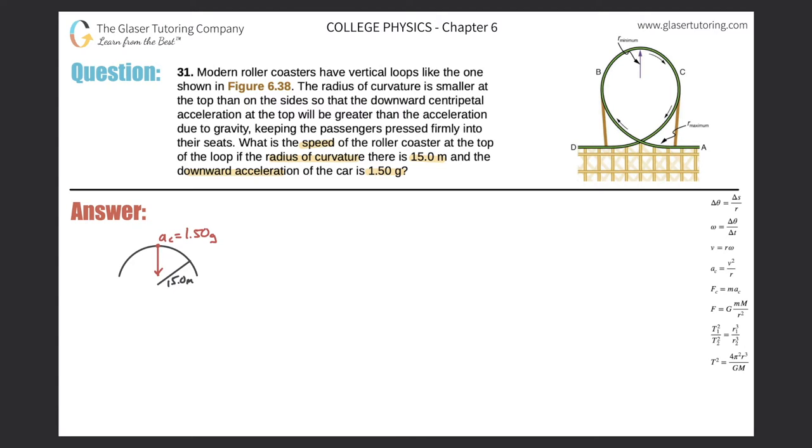The downward acceleration at the top points where? It points to the center. What's the acceleration called when it points directly to the center? Centripetal acceleration. So we have centripetal acceleration and we have the radius of curvature.